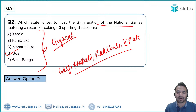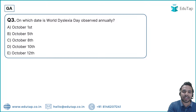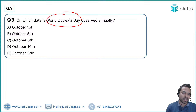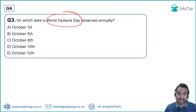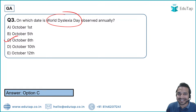Question 3: On which date is World Dyslexia Day celebrated? The options are 1st, 5th, 8th, 10th, or 12th October. The correct answer is 8th October — we celebrate World Dyslexia Day on October 8th.